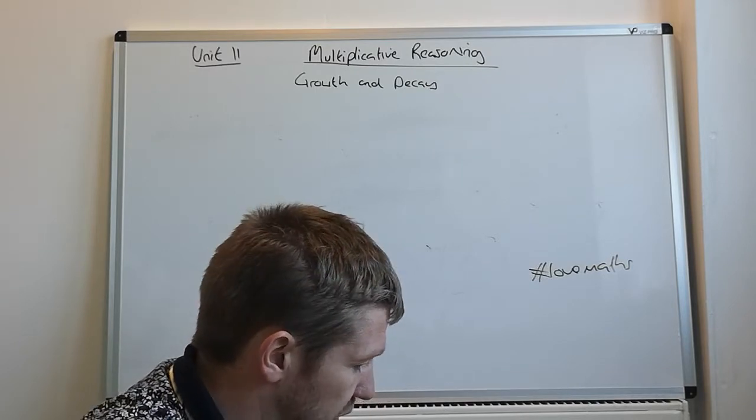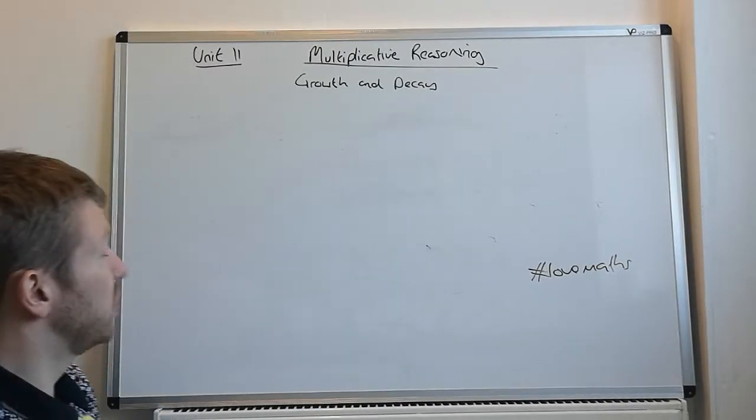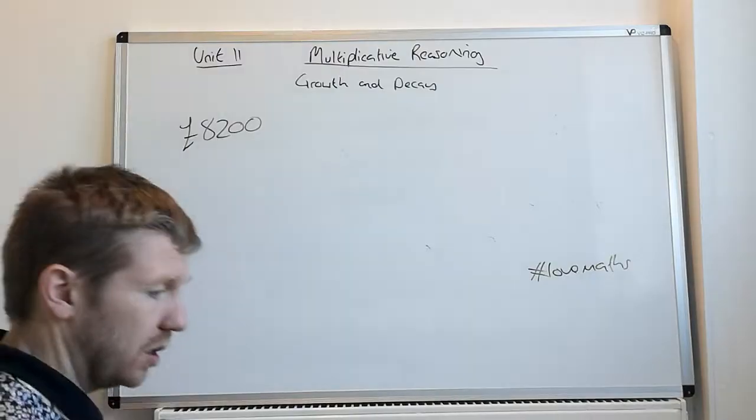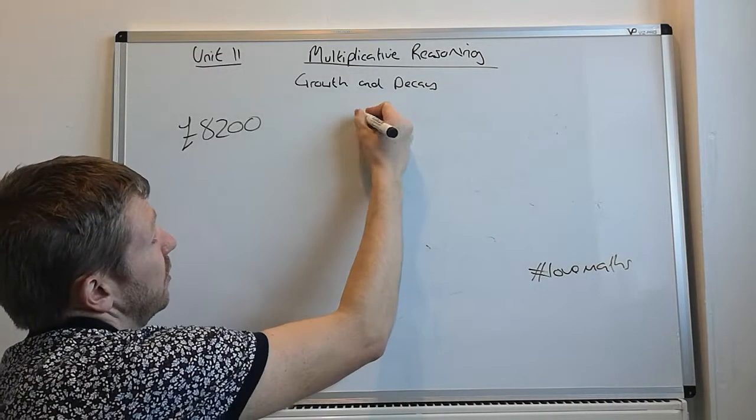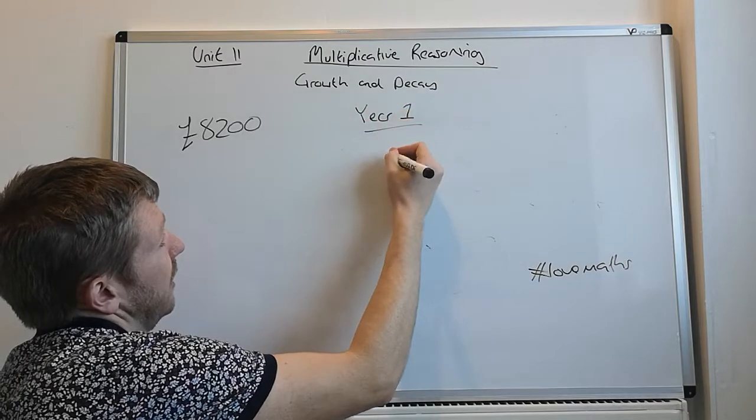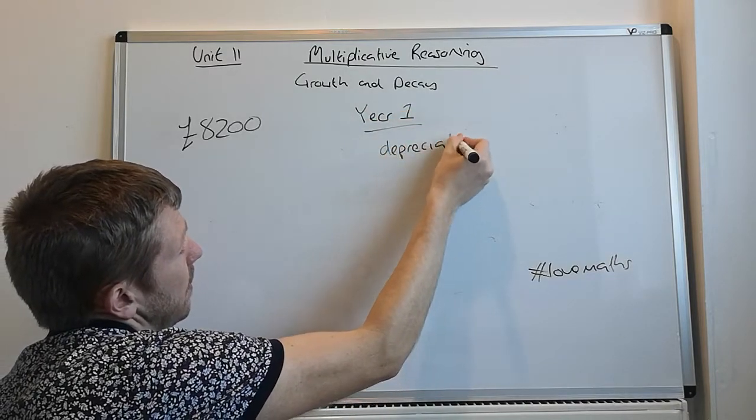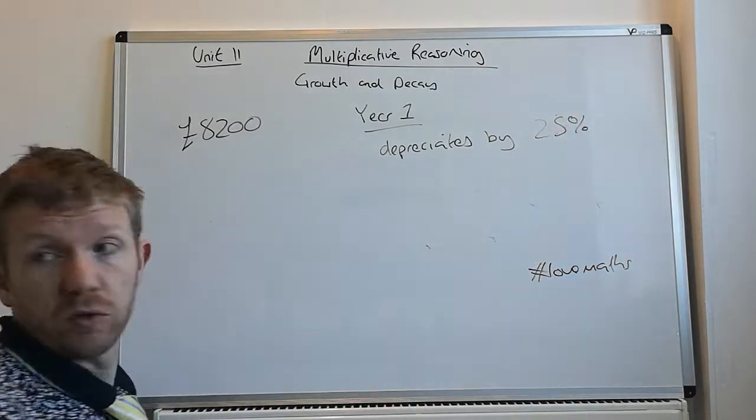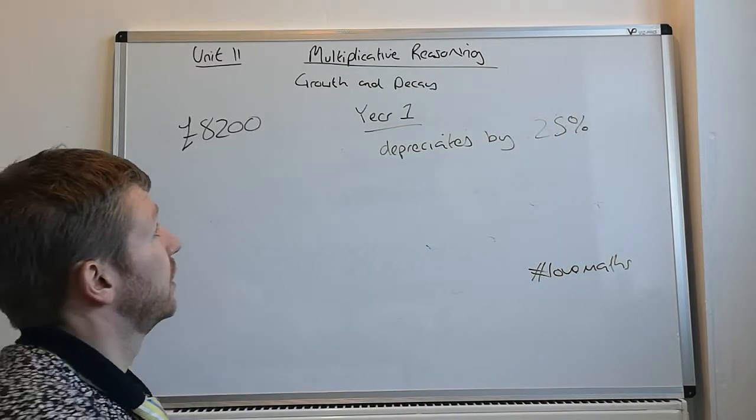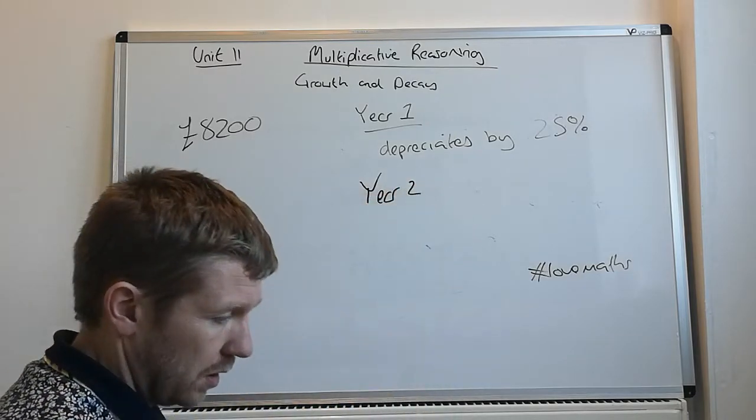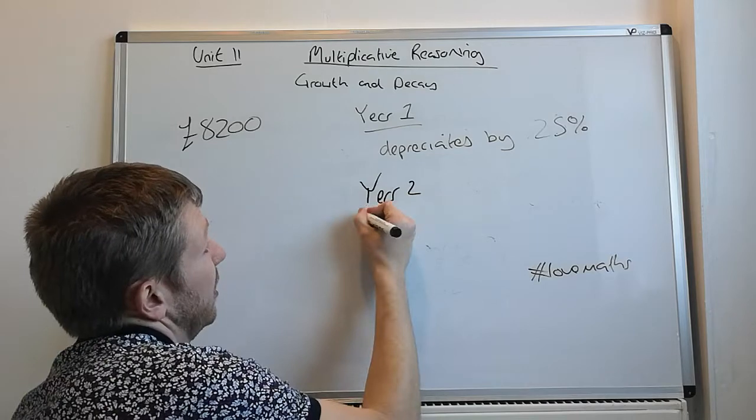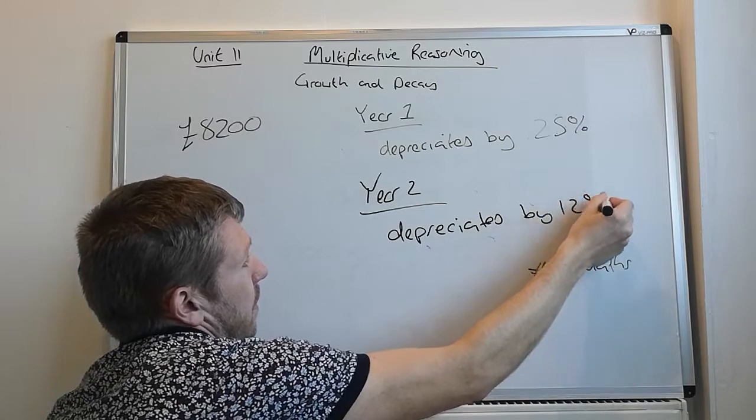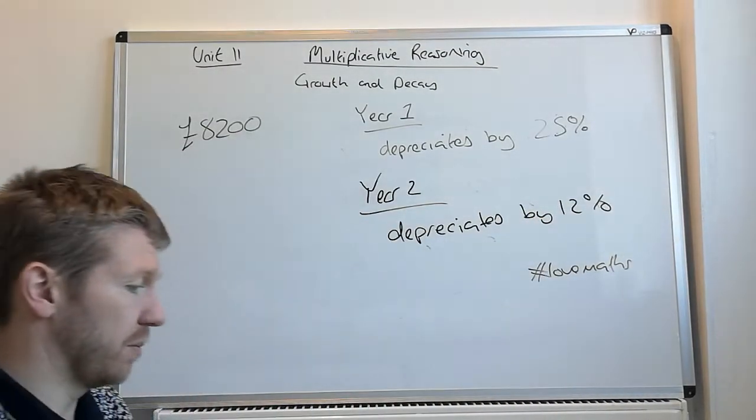So, the next question I want to look at is question 8. Abby buys a motorbike. She buys a motorbike for 8,200 pounds. Purchase price, 8,200. In the first year, it depreciates. So, year one, it goes down, depreciates by 25%. Year two, it depreciates by 12%. What you need to do is work out the value of the motorbike at the end of the two years.